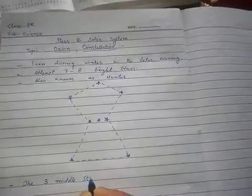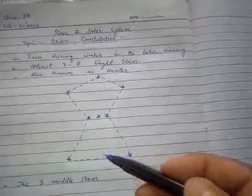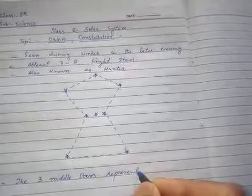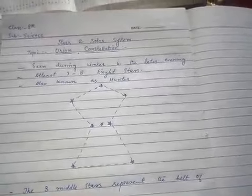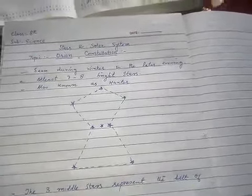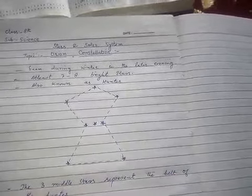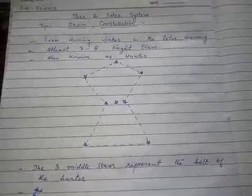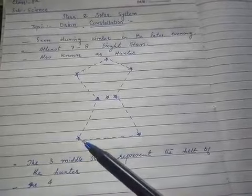The three middle stars represent the belt. These three middle stars represent the belt of the hunter, because the hunter is wearing a belt. These four stars and these three in the middle form the belt.